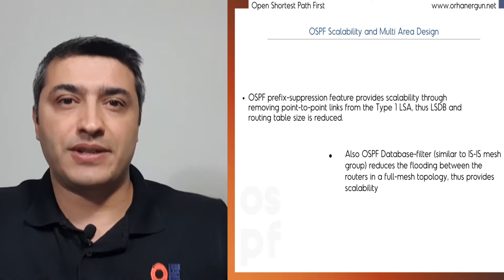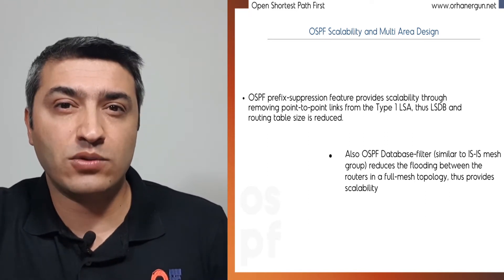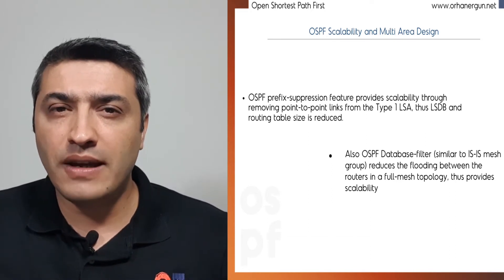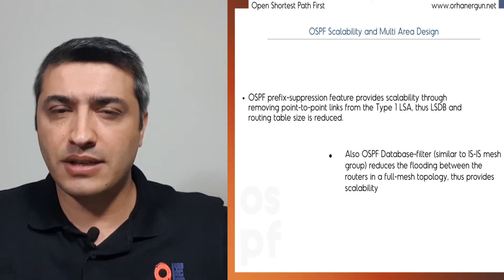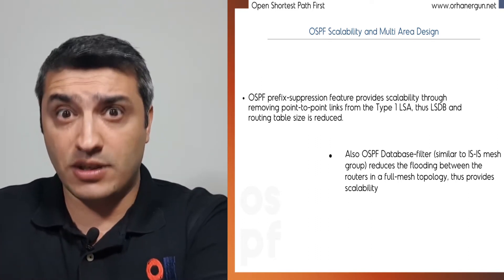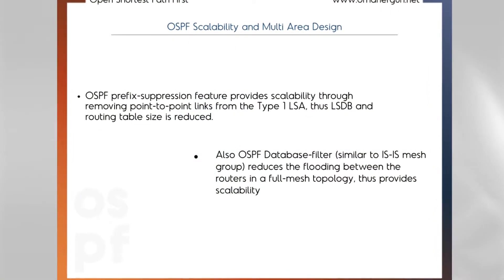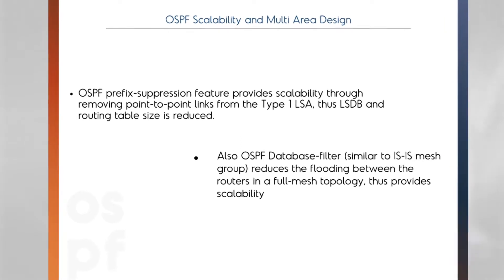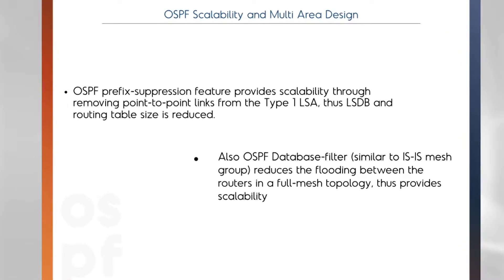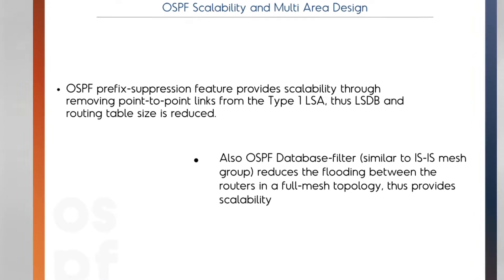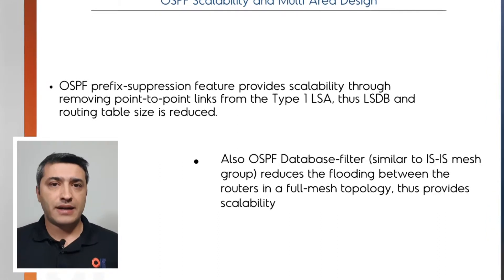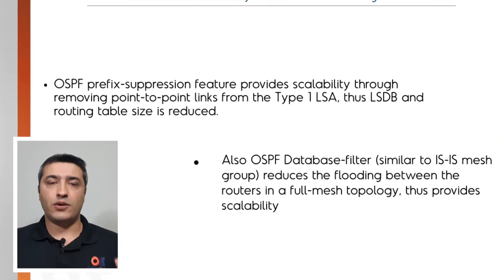Faster troubleshooting means high availability also increases. In network design we talk about Mean Time Between Failure and Mean Time To Repair. MTTR is related to troubleshooting time — how long it takes to repair a failure. If you reduce troubleshooting time, you increase availability. That's why prefix suppression is an important feature that operators use. Of course, if we're talking about just 5, 10, or 20 routers, we shouldn't bother with prefix suppression or multi-area OSPF — we're talking about large-scale OSPF design.